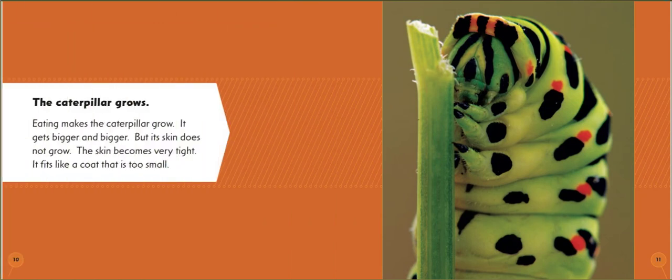The caterpillar grows. Eating makes the caterpillar grow. It gets bigger and bigger. But its skin does not grow. The skin becomes very tight. It fits like a coat that is too small.